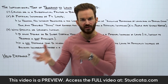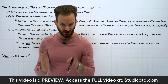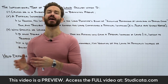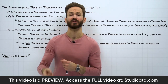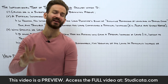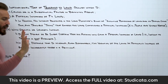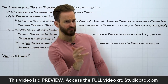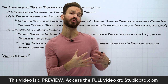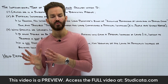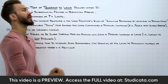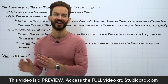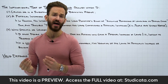As we worked through battery, assault, false imprisonment, and intentional infliction of emotional distress, we saw different variations of these three essential elements. Now, even though we're moving from intentional torts that involve harms to people to intentional torts that deal with harms to property — things like trespass to land and trespass to chattels — the essential elements of the intentional torts themselves really don't change.